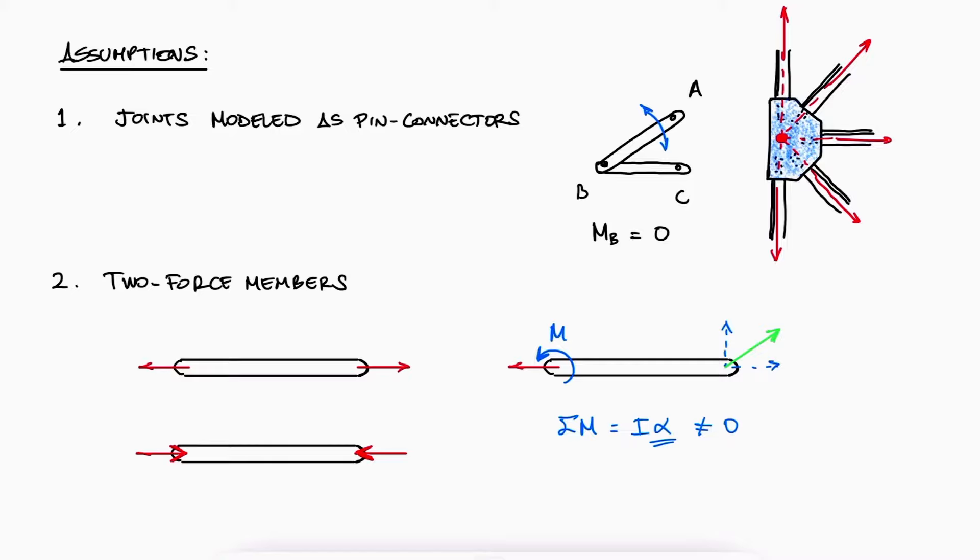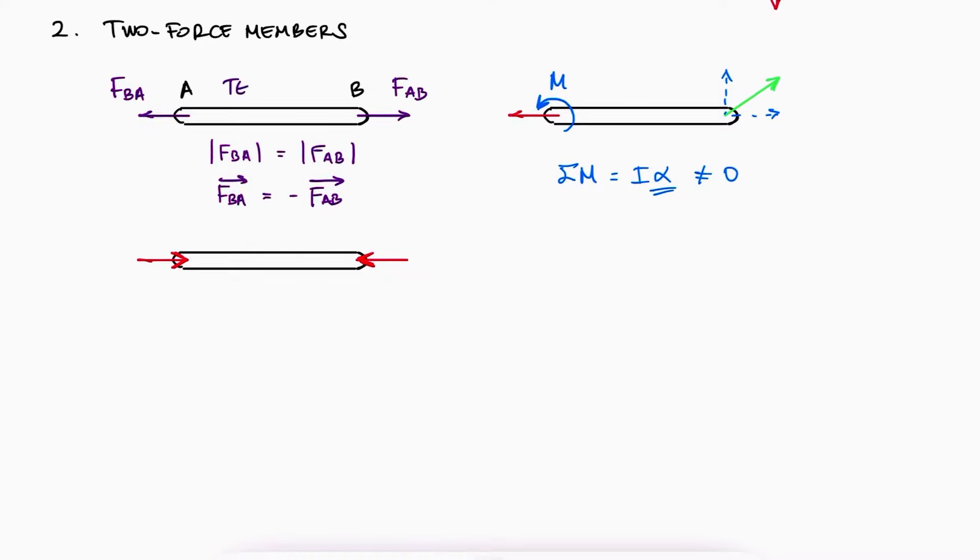Two force members mean that the members can only carry axial loads. Since the members are static, the forces at each end are of equal magnitude and opposite in direction. We'll keep using the convention of positive for tension and negative for compression.